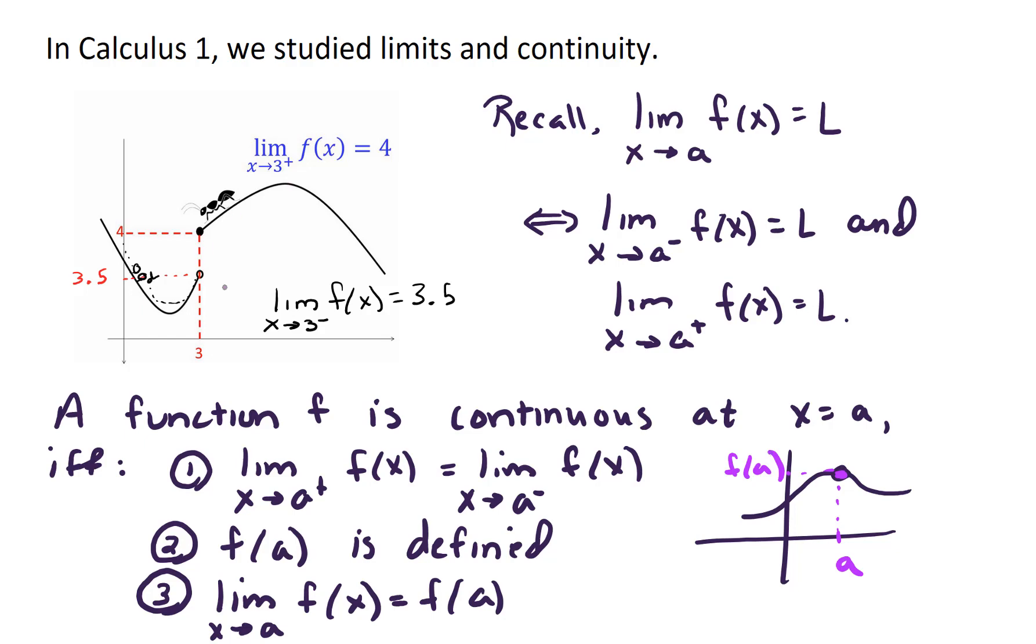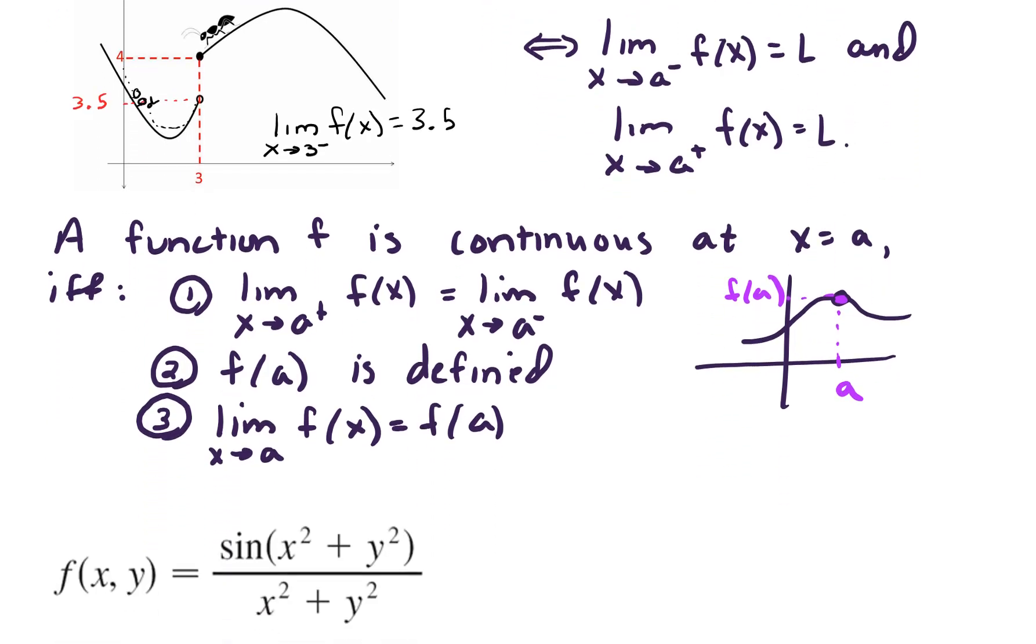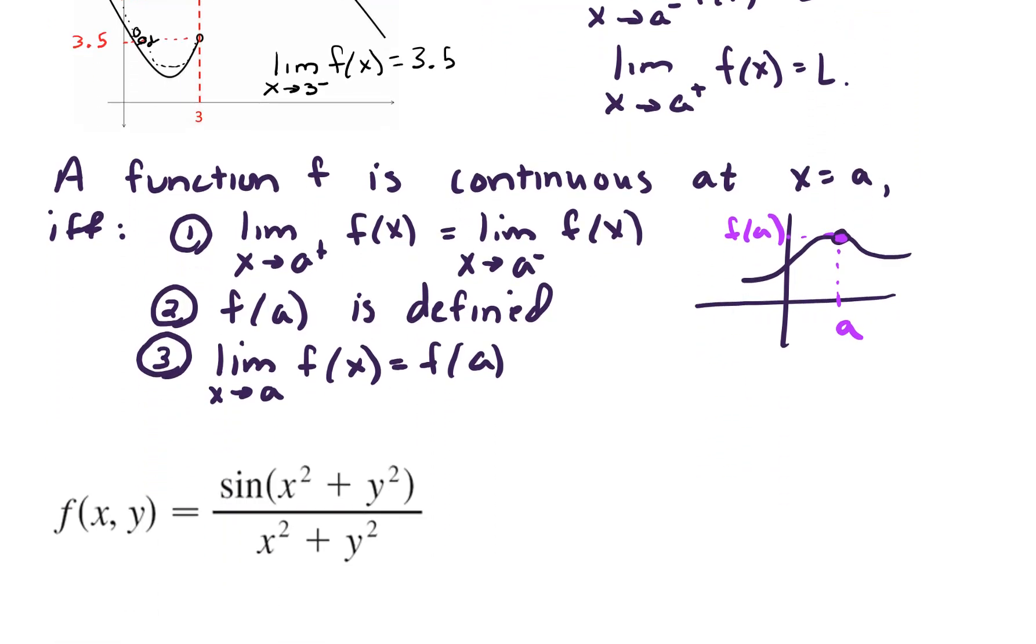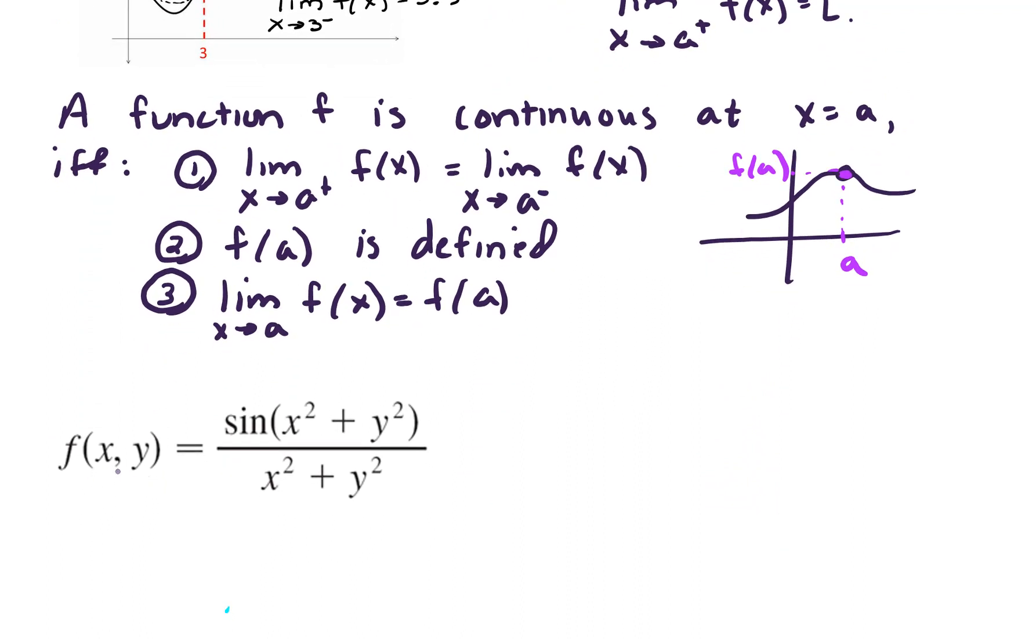So first of all, let's think about this two-sided limit existing. In Calc 1, we only had two sides to approach because we're working in the plane of our paper, we've got a curvy line, we can only approach a point from the left or from the right. Now in Calc 3, we have many more directions that we can come in towards a value. So for example, suppose I gave you f of xy equals sine of x squared plus y squared divided by x squared plus y squared.